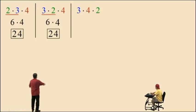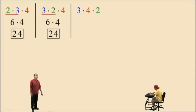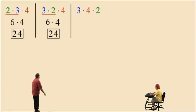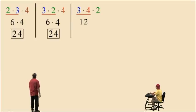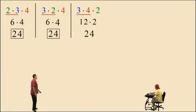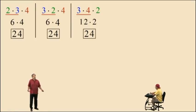Now let's rearrange the numbers completely: 3 times 4 times 2. We should get the same answer, right? 3 times 4 is 12, and 12 times 2 is 24. So basically, we can multiply in any order.